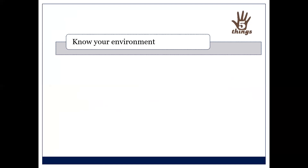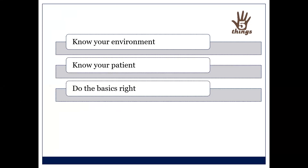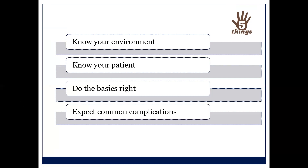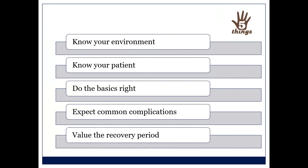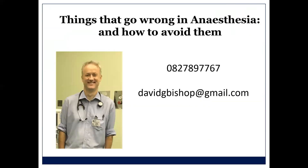The five things I've been encouraging on the district anesthesia channel: know your environment, know your patient, do the basics right, expect common complications like spinal hypotension and plan for them, and value the recovery period. And when things are going to go wrong — when you anticipate things going wrong in anesthesia and want to know how to avoid them — phone a friend. Ideally that's the person at the referral hospital, but if not, I will be your friend. There's my phone number and email address — email me with things that went wrong so we can talk through them and put in place systems to avoid that the next time.